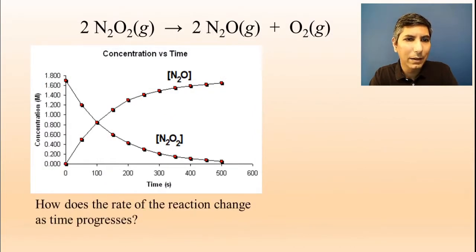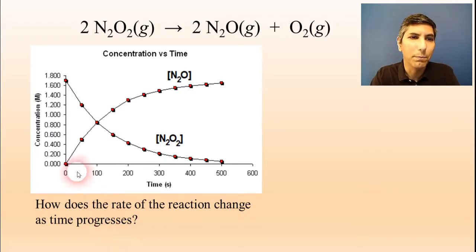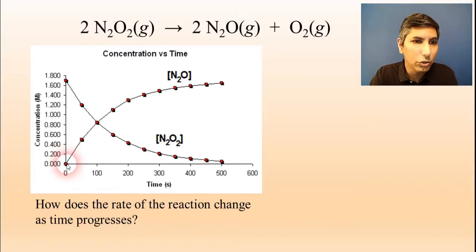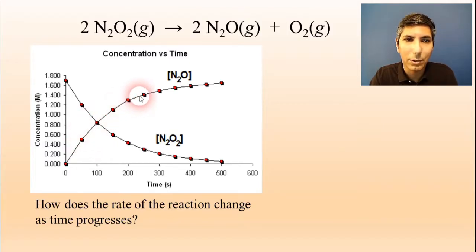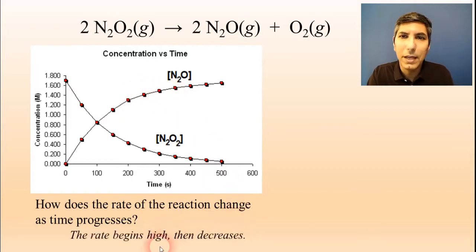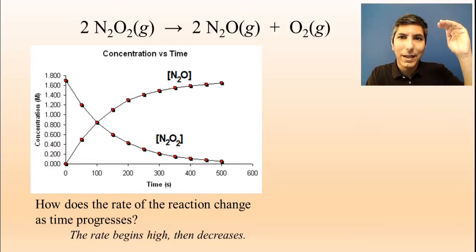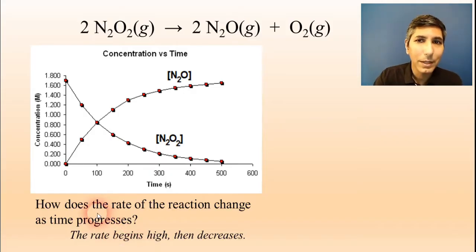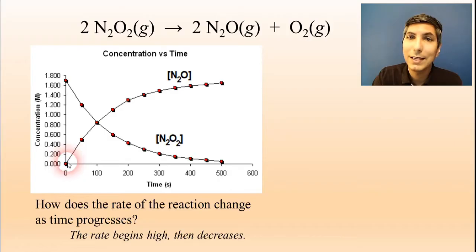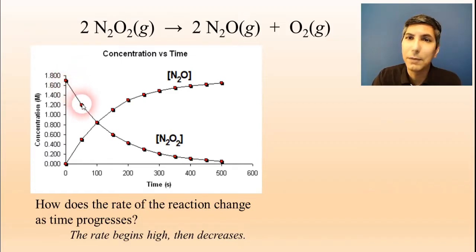Let's focus on how the rate of reaction changes as time progresses. For both substances, notice that at the beginning of the reaction, N₂O shoots up fairly quickly, and then with every interval after it, it shoots up slower and slower. So we notice that at the beginning of the reaction the rate is the highest, and then as time goes on the rate goes down. Mathematically, the absolute value of the slope of the line is highest at the beginning of the reaction, and likewise for the reactant — it slows down after that.